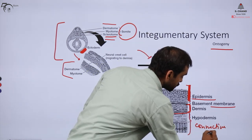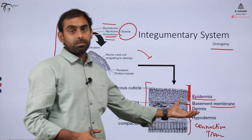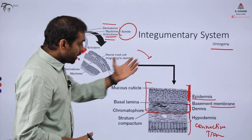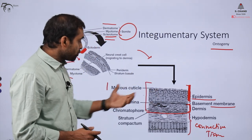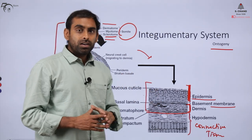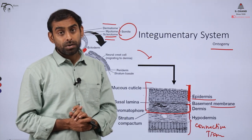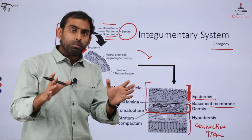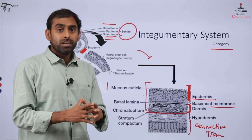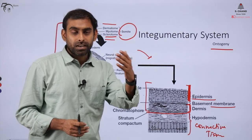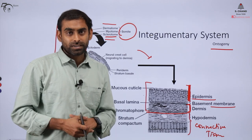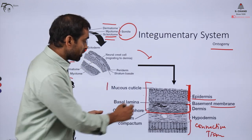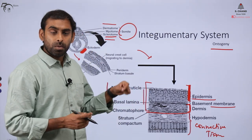The epidermis and dermis layers are diverse in different vertebrates. In comparative anatomy, we see that these layers vary. You might have observed that externally, a fish's skin, a lizard's skin, our skin, and a frog's skin have quite a difference. The appearances of these skins are different because they are also anatomically different.